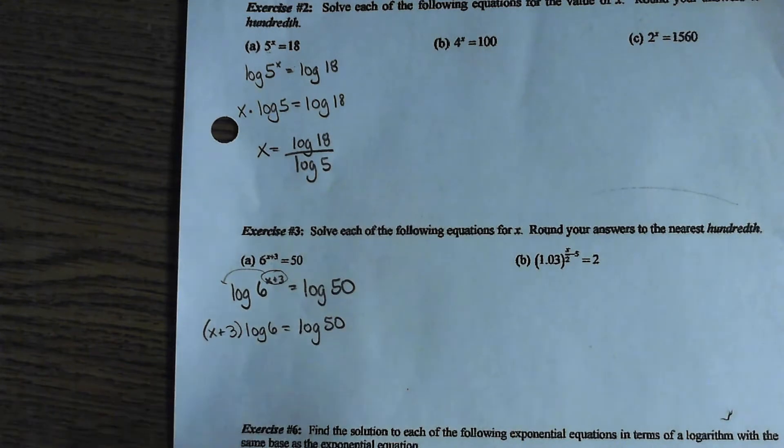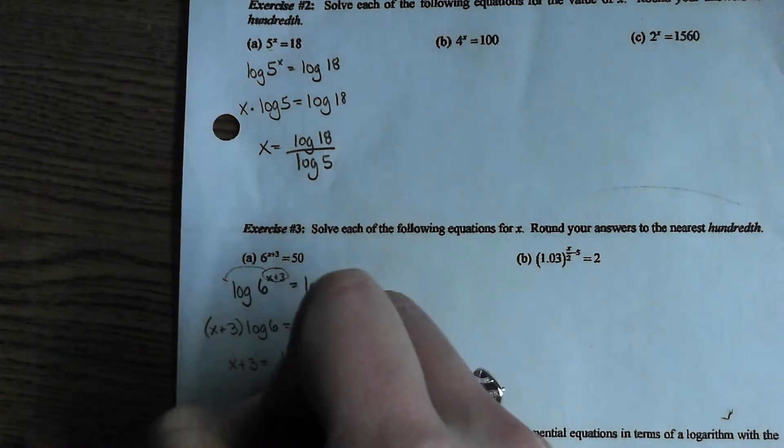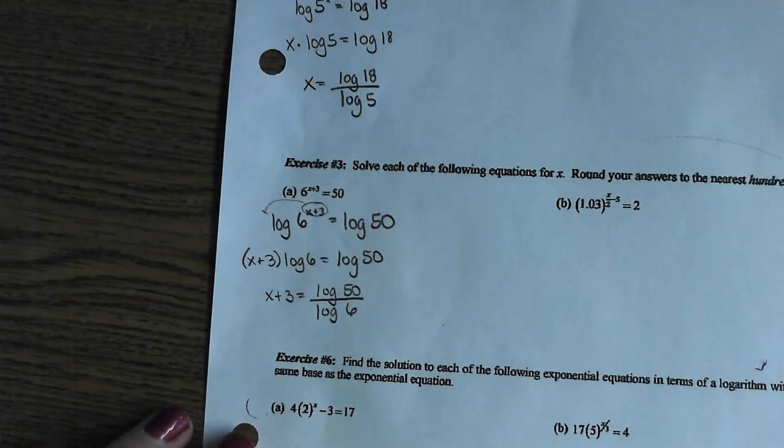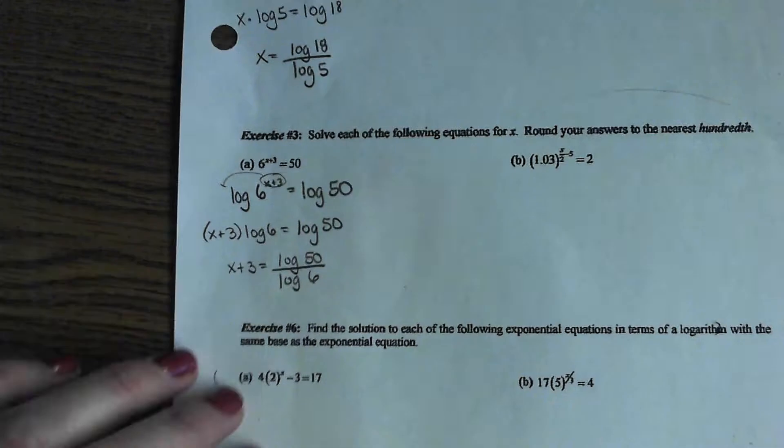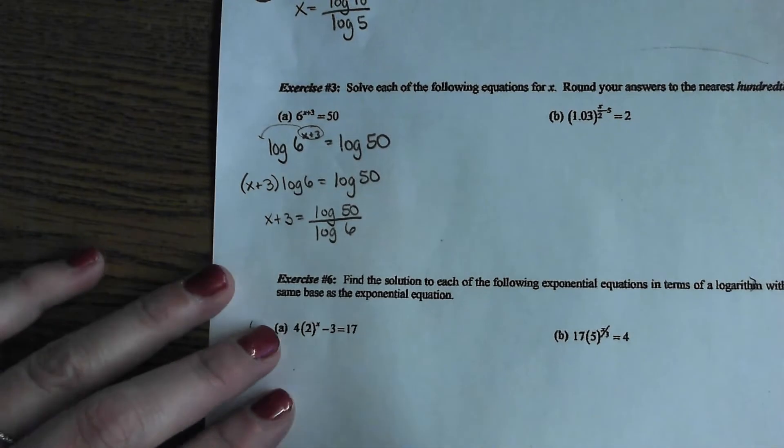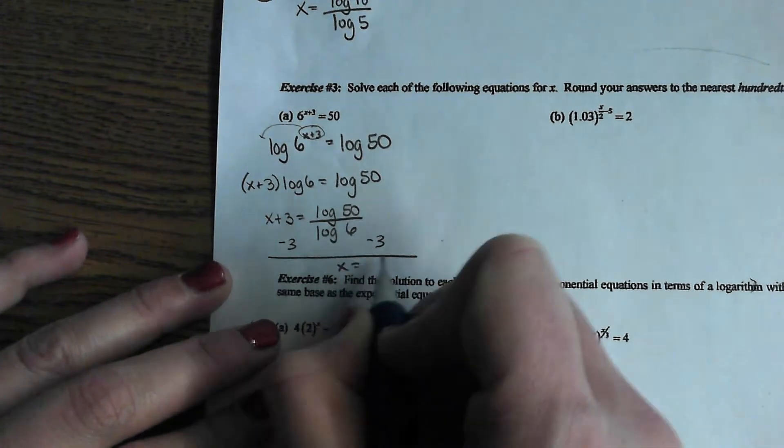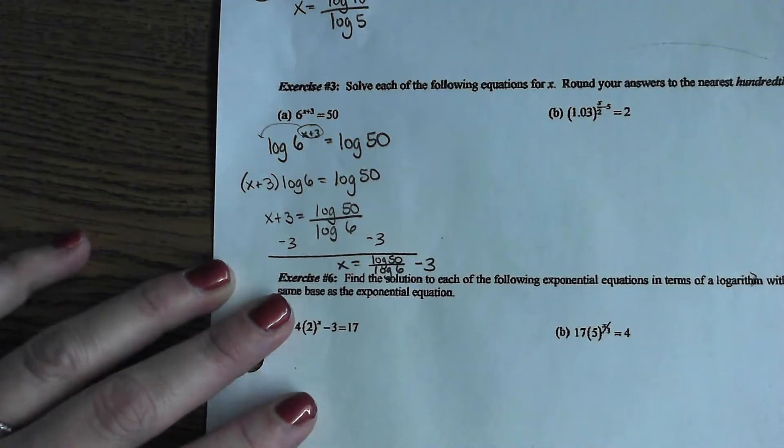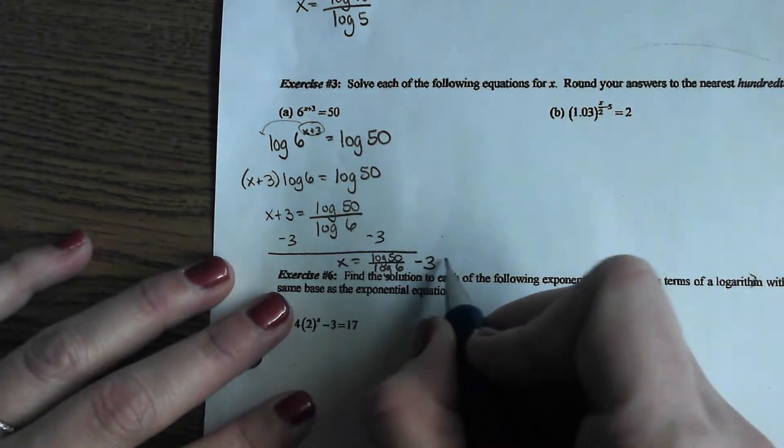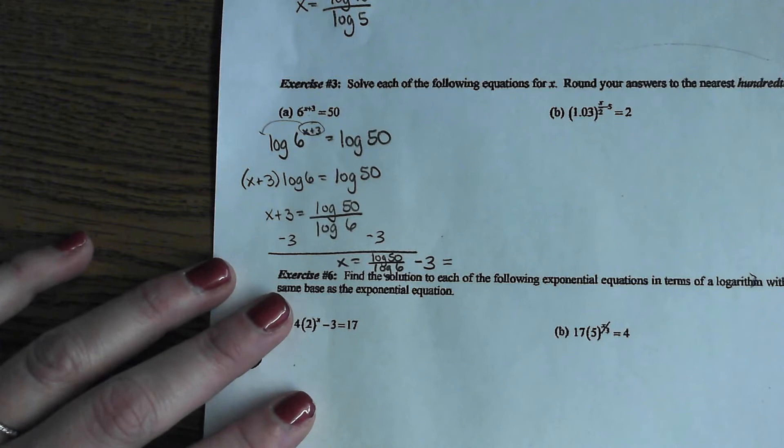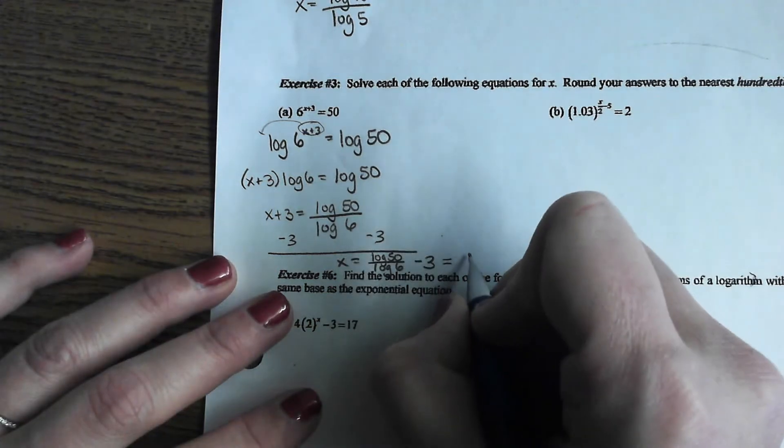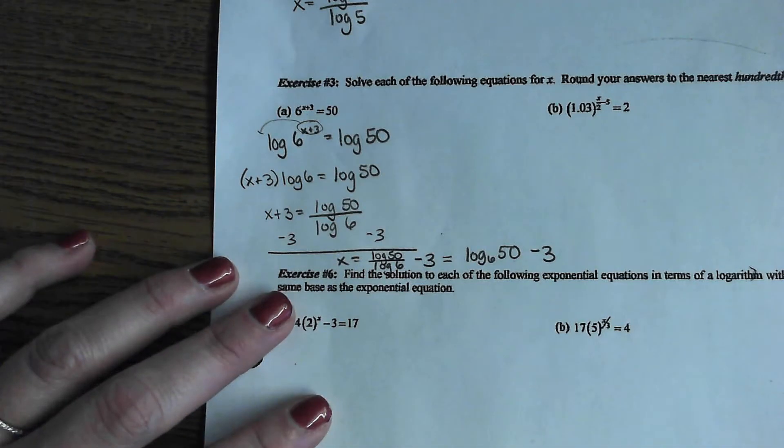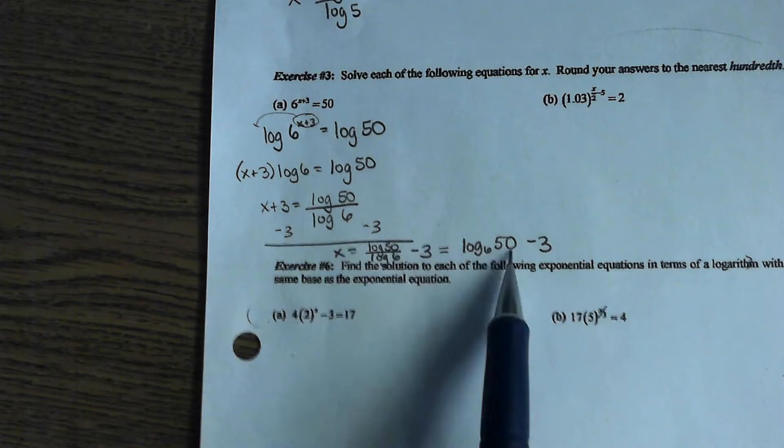Still divide over your log of six. And then we just have one additional step, which is what, Owen? And we do that by what? Subtract three from both sides. So, X equals the log of 50 divided by the log of six minus three. Which, for the record, because of that change of base formula potential, that might also be written as log base six of 50 minus three. Just so you are aware of the two different ways to write that.